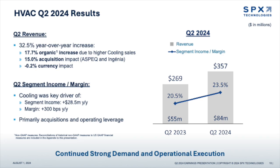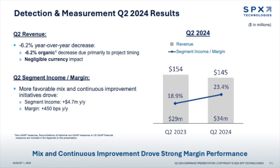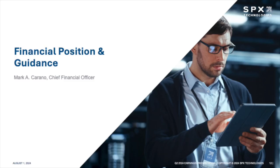Turning to our high-level results. For the second quarter, we grew revenue by 18.4% and adjusted EBITDA by 45% year-on-year with 400 basis points of margin expansion. We achieved several firsts in this quarter, including the first quarter since the spin with revenue in excess of $500 million and with adjusted operating income of more than $100 million. We also achieved our highest post-spin EBITDA and EBITDA margin, which reached $109 million and 21.7% respectively.